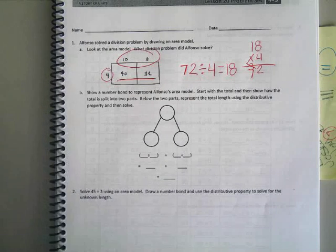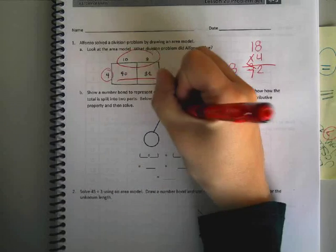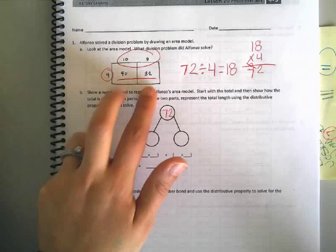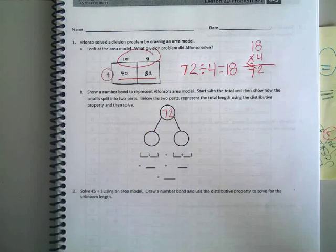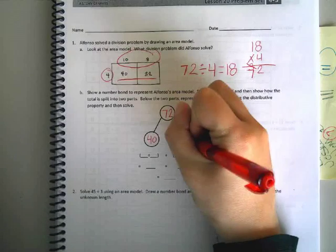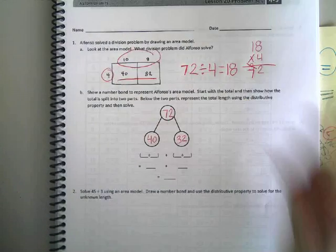So what was our whole number we started with? You guys just told me. 72. And then he split it up into two parts. What were the two parts? 40 and 32. Good job.